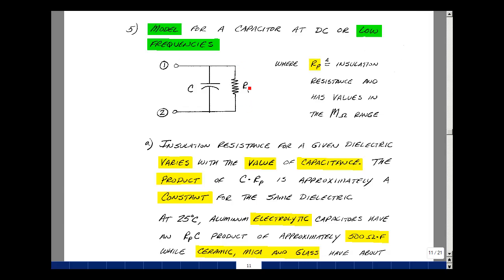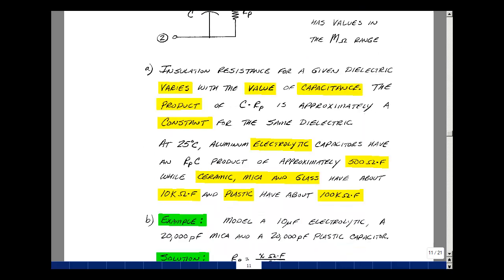The insulation resistance for a given dielectric varies with the value of capacitance. The product of the capacitance and the insulation resistance is roughly constant for the dielectric, so as you change the capacitance value, the value of the parallel resistance also changes. At 25 degrees C, an aluminum electrolytic capacitor would have an R-P-C product of around 500 ohm-farads, whereas ceramic, mica, and glass would have about 10,000 ohm-farads, and a plastic dielectric would have something like 100,000 ohm-farads.